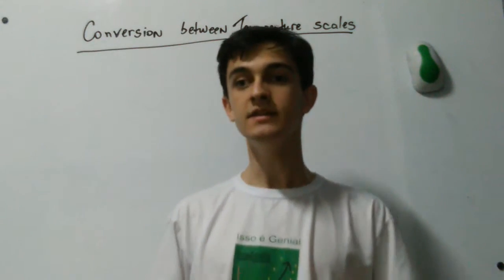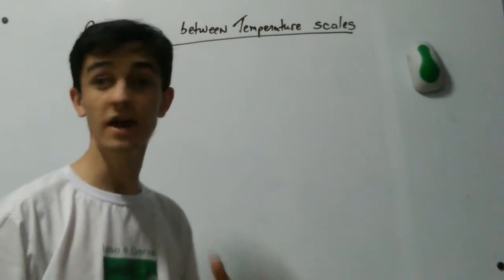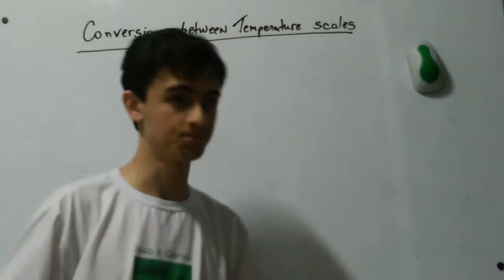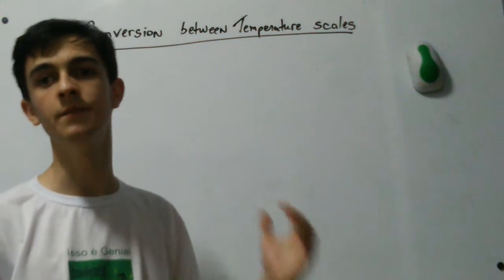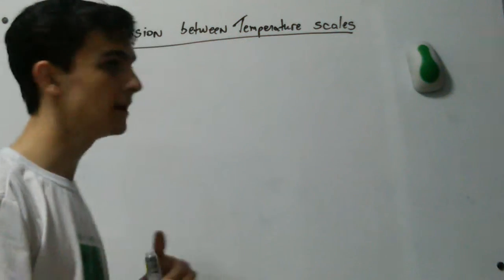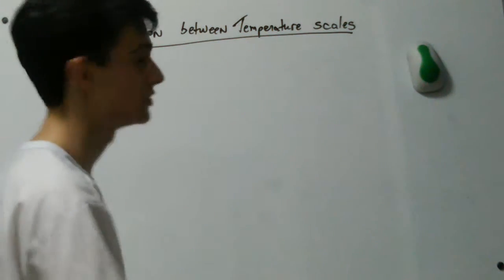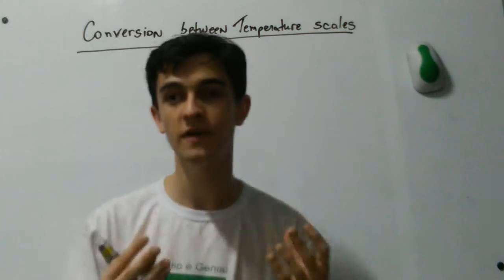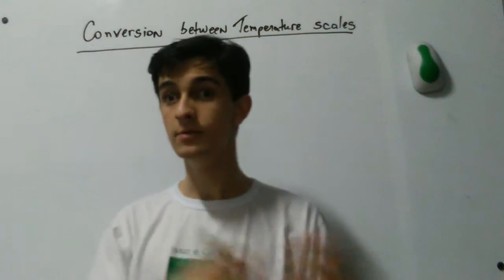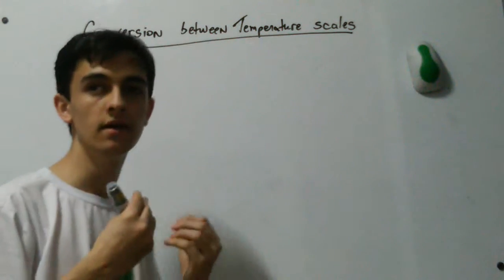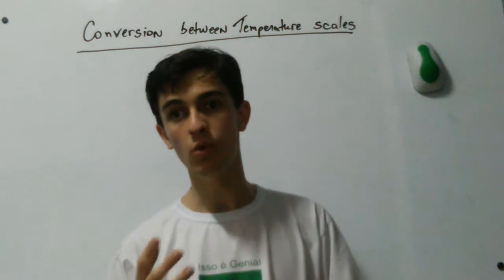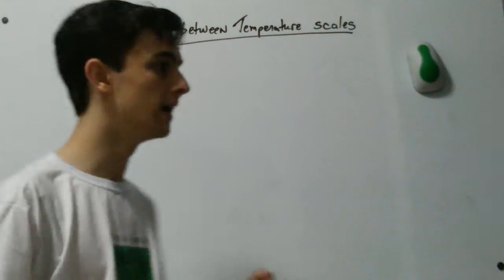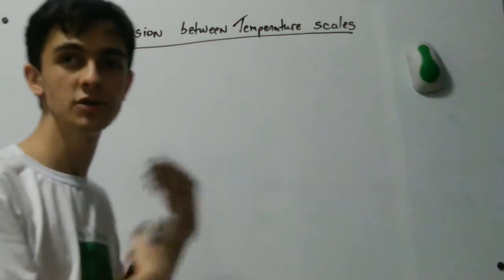I'm João Marcos from That's Brilliant and in this video we're going to have another thermal physics video and we're going to discuss the conversion between temperature scales. In the video about temperature and heat we started discussing what temperature is. Temperature is the measure of how fast the particles of an object are moving. When we measure we want to assign a number to a given temperature, so for that we created temperature scales.